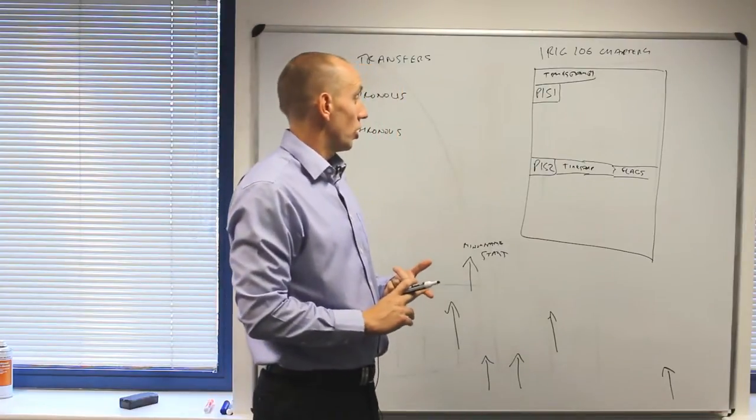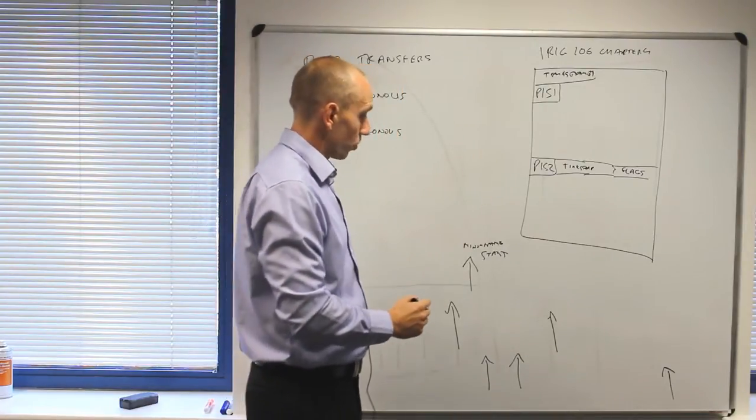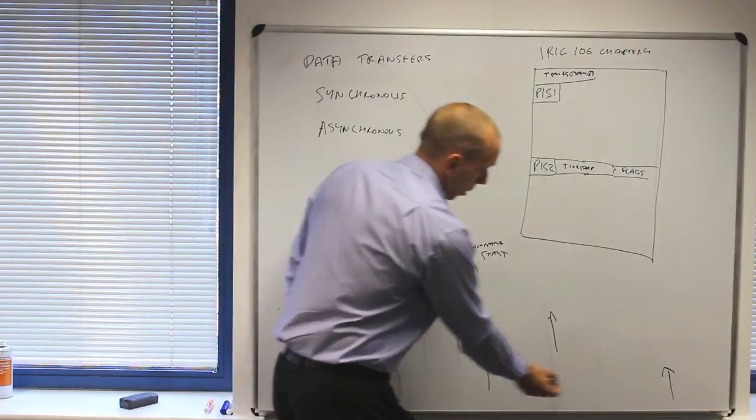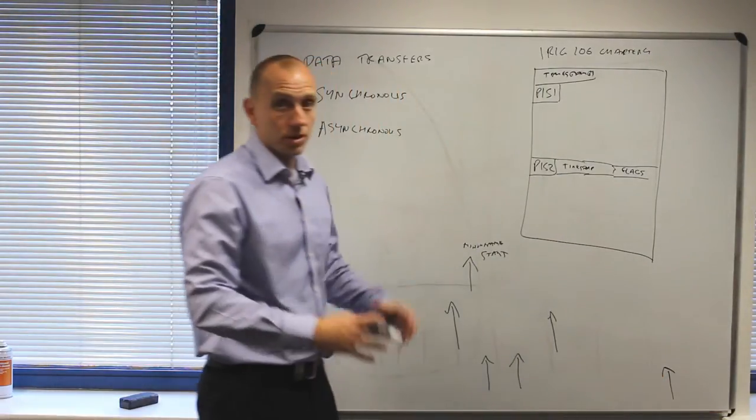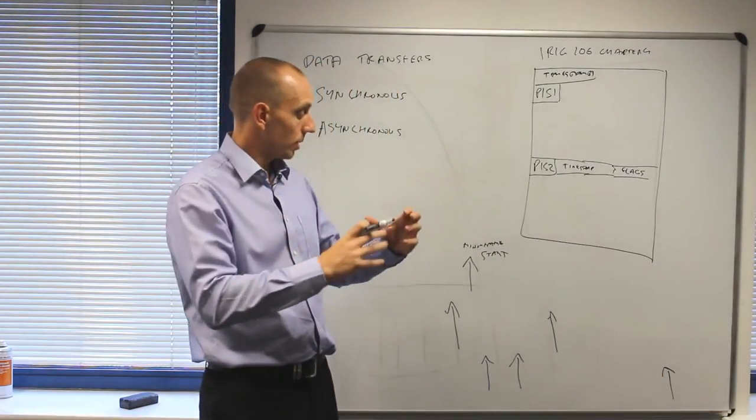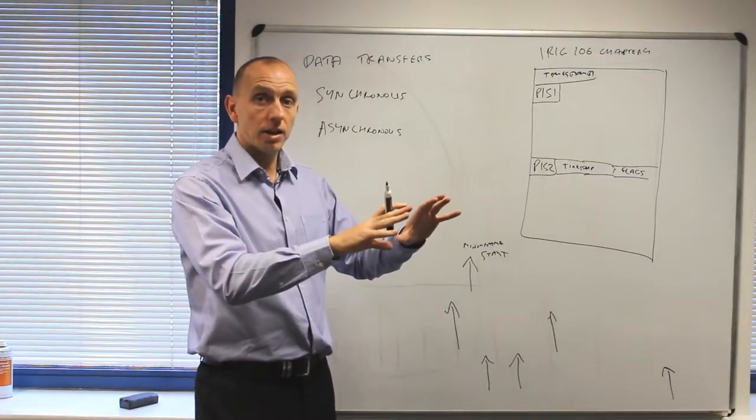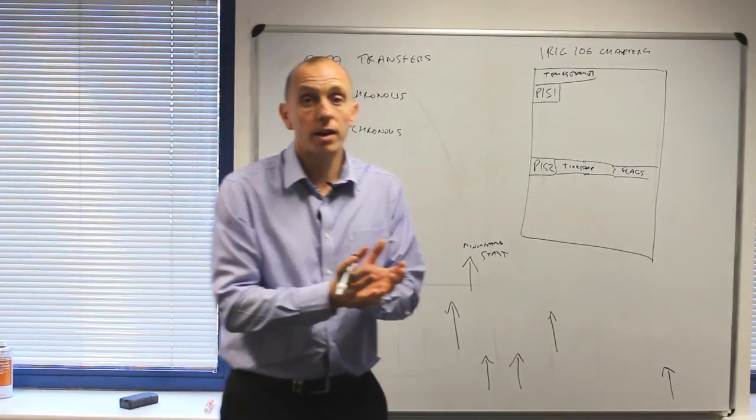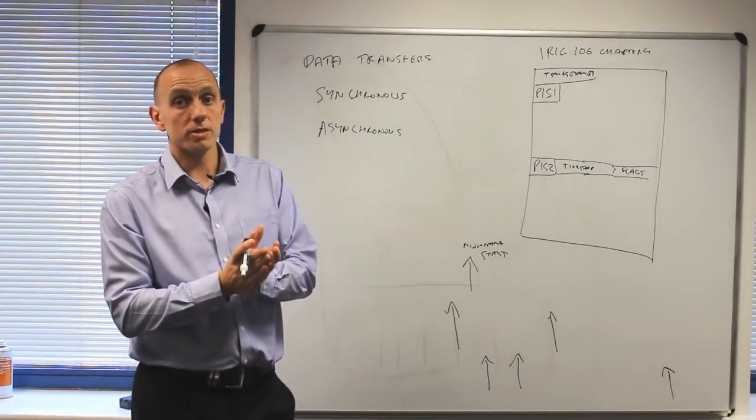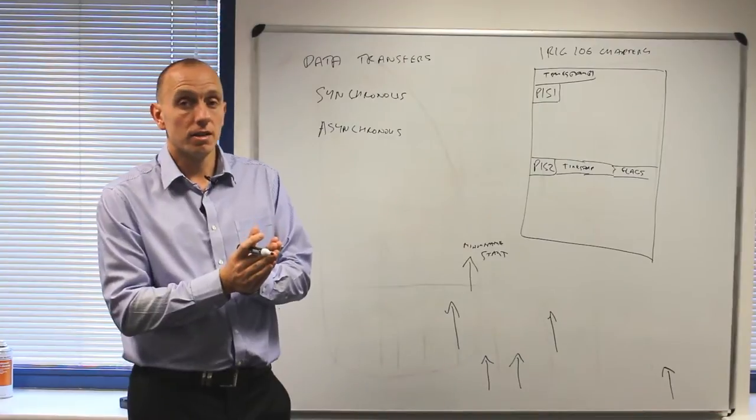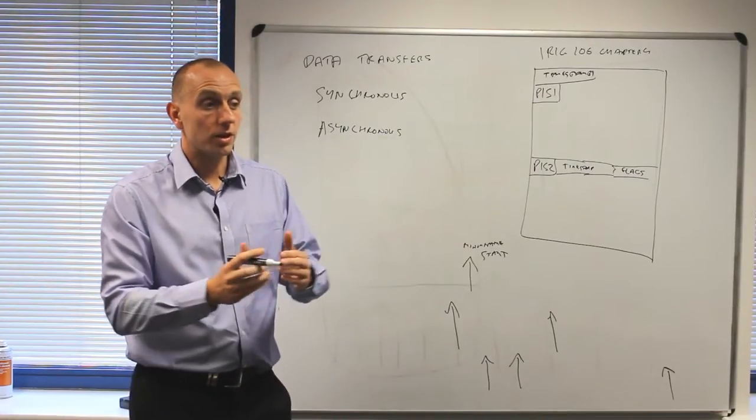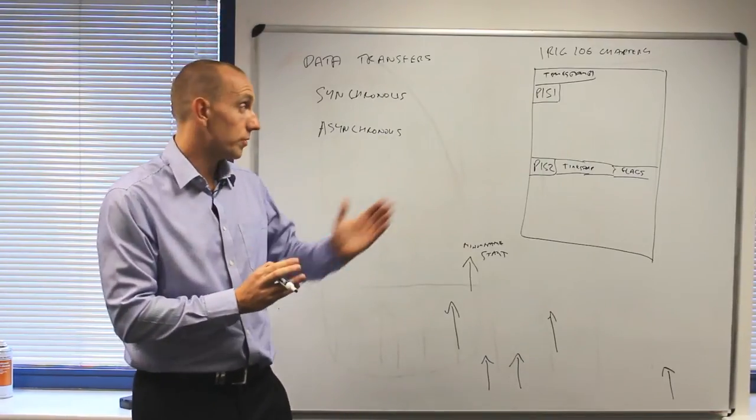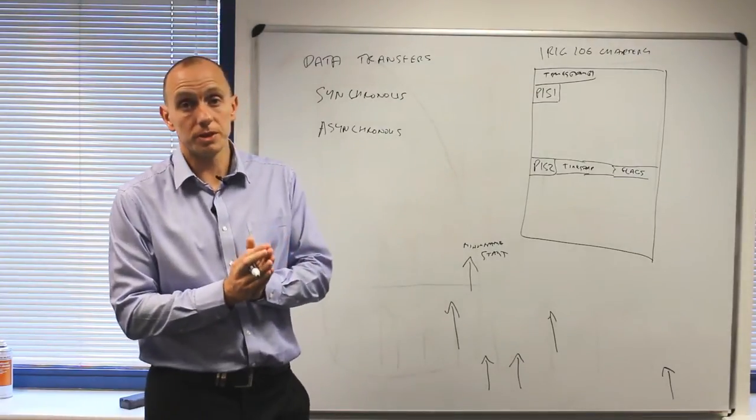So the other option is to just wait until you gather up all of the asynchronous parameters, gather them together, time stamp each one and send it down in an asynchronous packet. This asynchronous packet works very well in the ethernet world because this is the way ethernet traffic is. This is the way the ethernet protocol works but obviously doesn't work quite so well in the IRIG 106 PCM world.